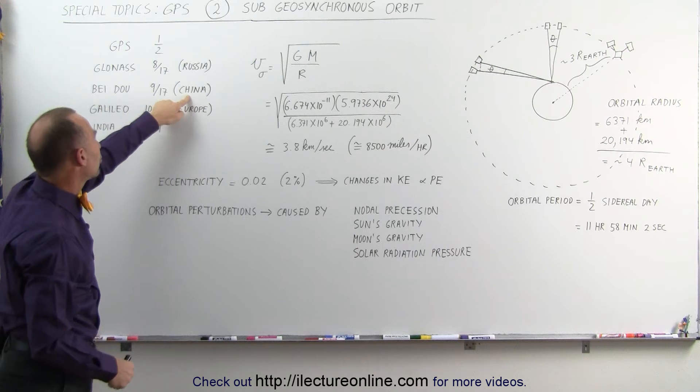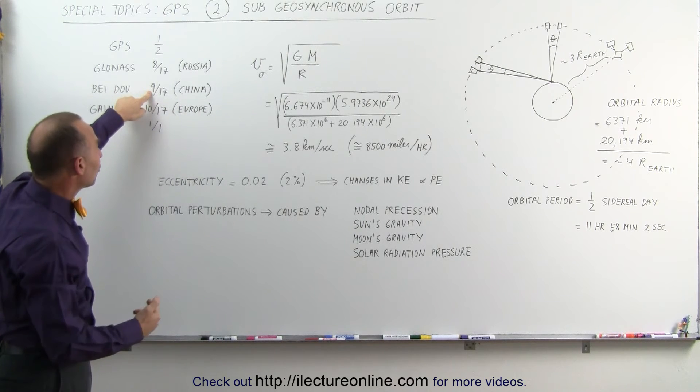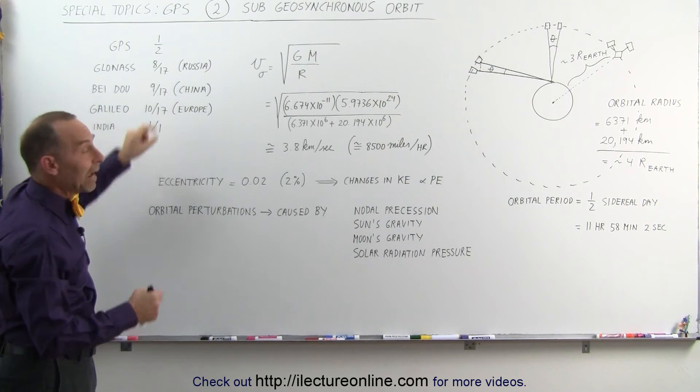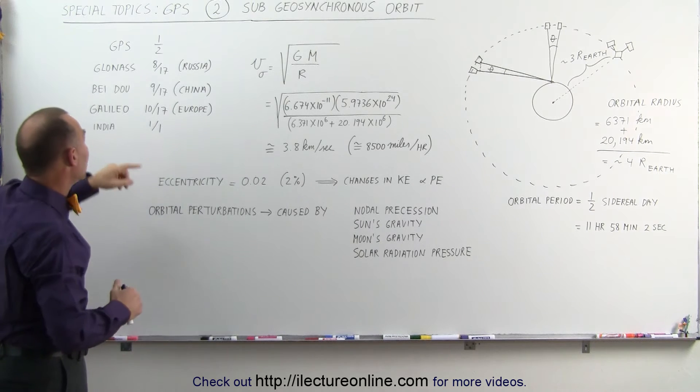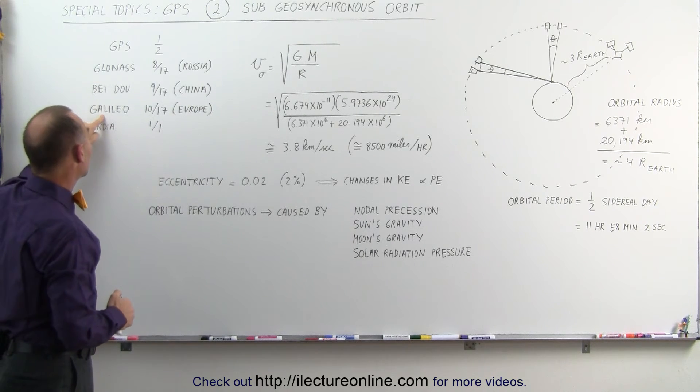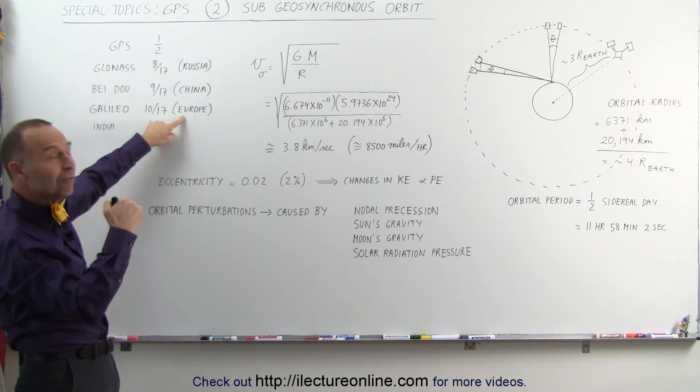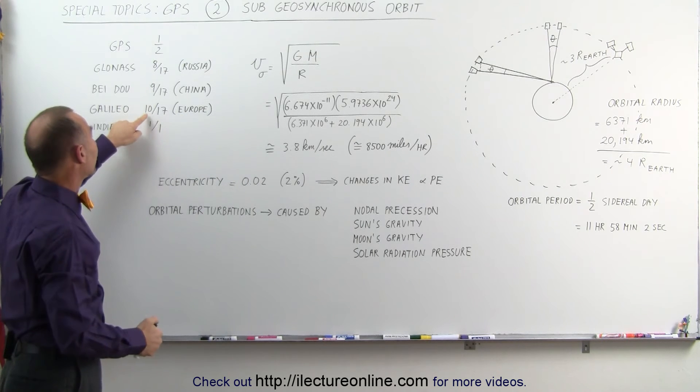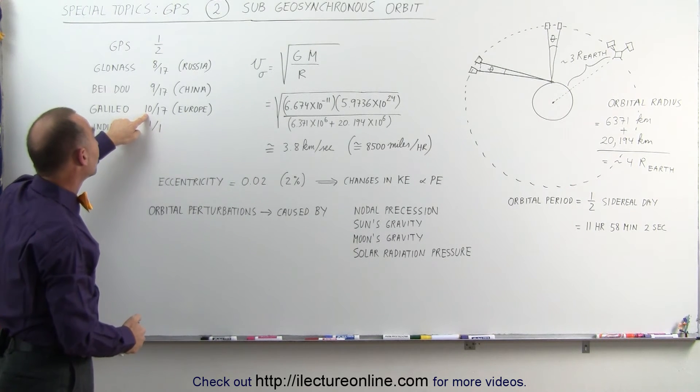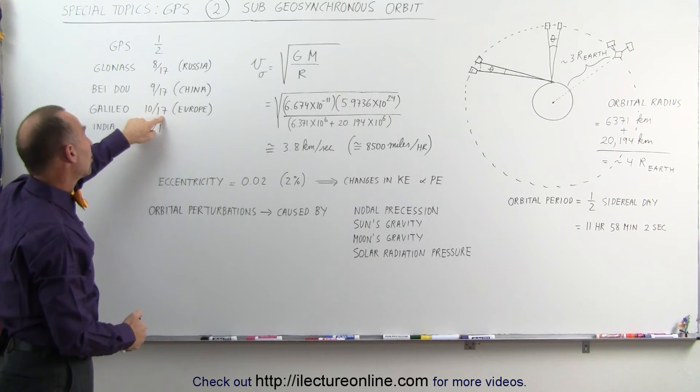The Beidou system from China, for every nine rotations of the Earth, they make 17 trips, so they're actually a little bit farther away than our GPS system. The Galileo system, which is the European system, is even a little bit farther away. In other words, for every 10 rotations of the Earth, their satellites make 17 trips around the Earth.